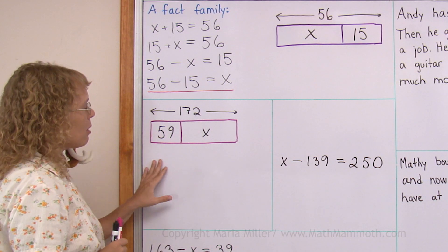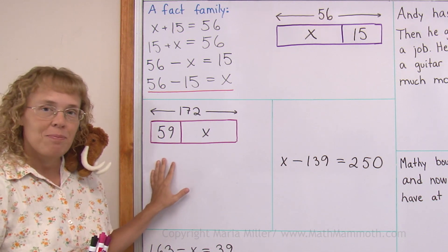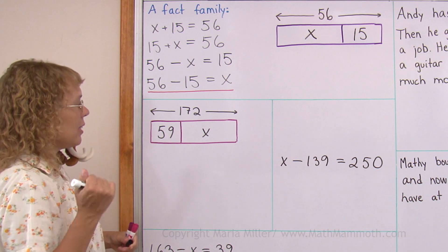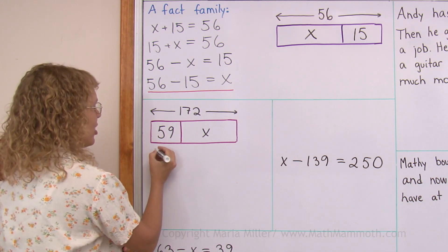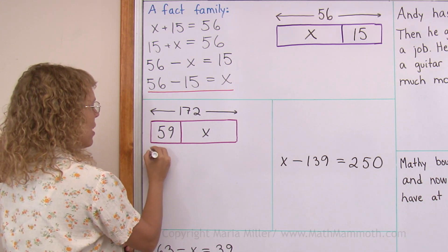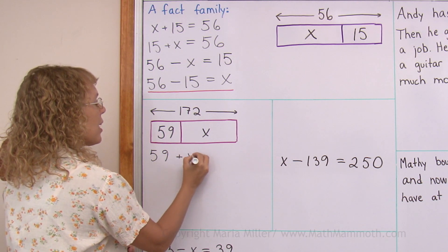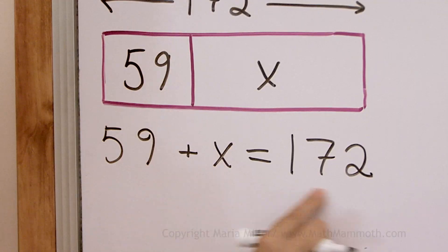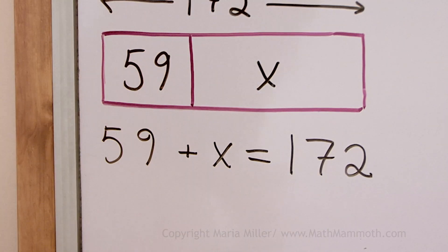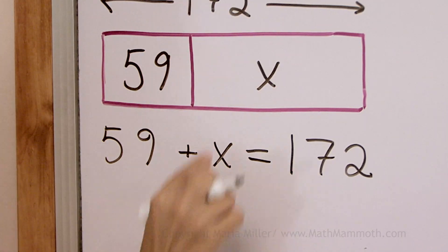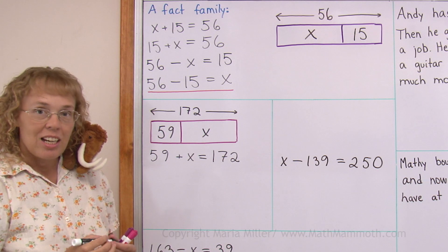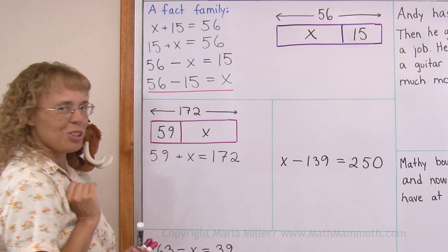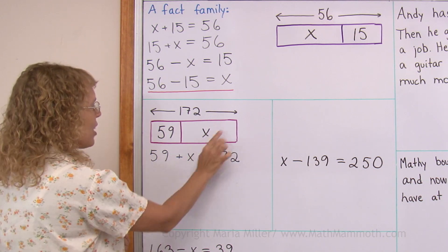Over here is another bar model. Let's write one addition and then one subtraction to match it and solve for x. The addition would be adding those two parts: 59 plus x equals 172. This could be an equation in a math book for you to solve, and it matches this bar model. How do we solve this? How do we find what x is?